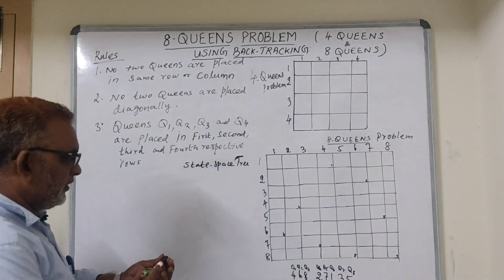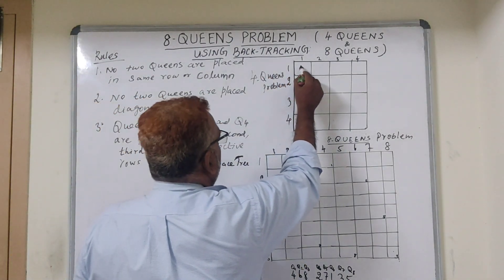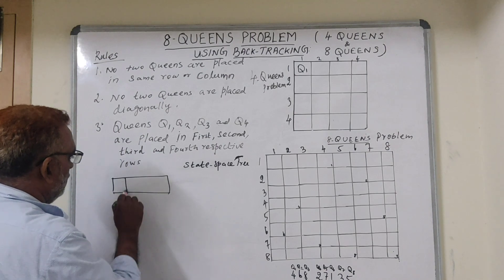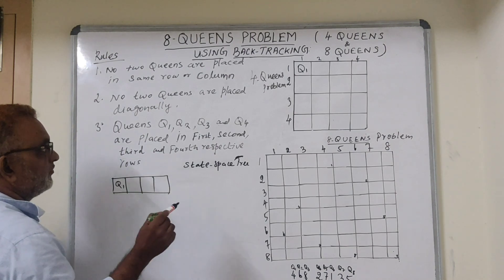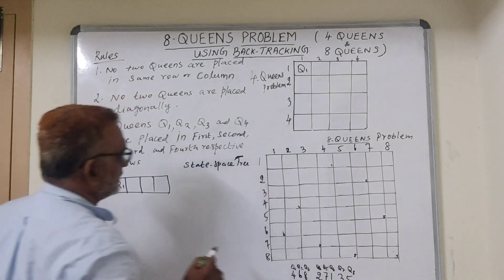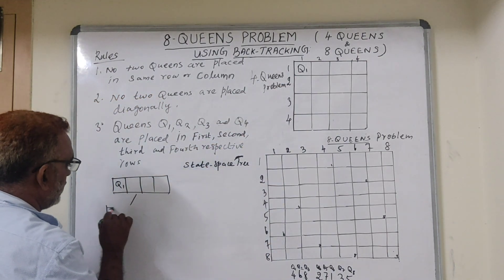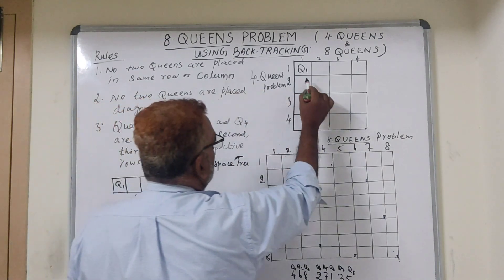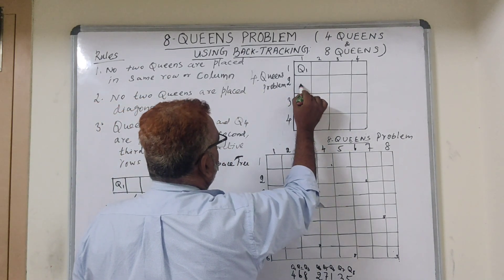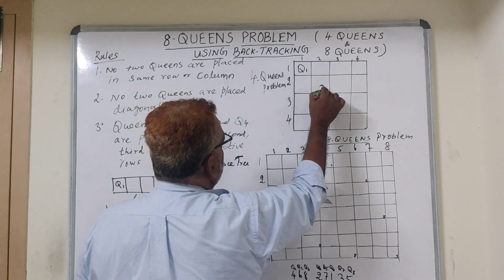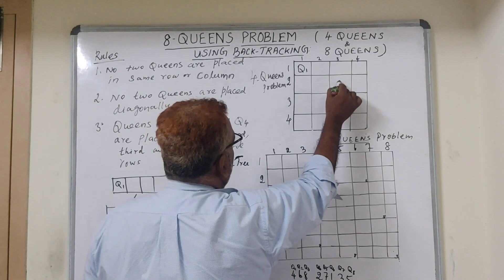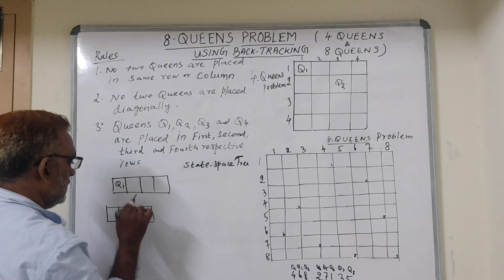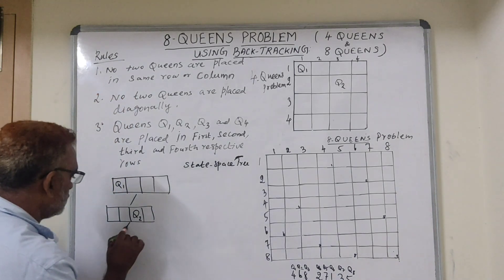Consider this 4 queens problem. I am placing queen 1 in the first cell of row 1 — this is the initial state. Now moving to the next state, I have to place queen 2. Can I place Q2 in column 1? No, it is in the same column. Column 2? No, it is diagonal. Column 3? Yes, I can place Q2 there. So queen 2 is placed in the third cell of the second row.